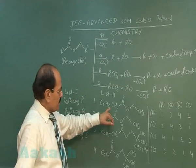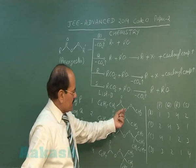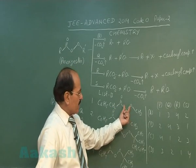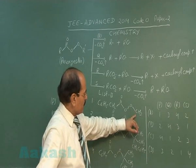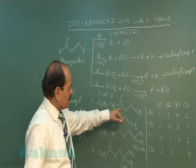If the peroxy ester is this, since the peroxide bond is a weaker bond, the O-O bond undergoes homolytic cleavage, giving rise to a methoxy radical and a carboxyl radical.